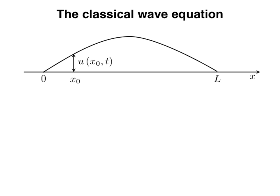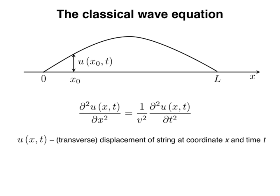The motion of the string is described by the classical wave equation. It is a partial differential equation — an equation for a function of more than one variable. For our case, that function is the deflection of the string u, which depends on two variables: x and t. The parameter v is the velocity of a wave moving along the string. Since the string is fixed at both ends, at x equals zero and x equals L, the displacements at those points are zero at all times. Thus, our string is subject to the following boundary conditions.